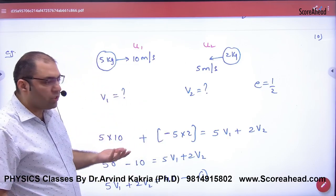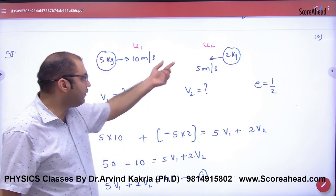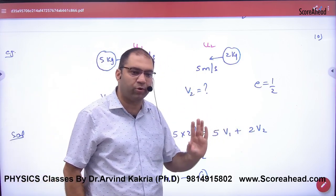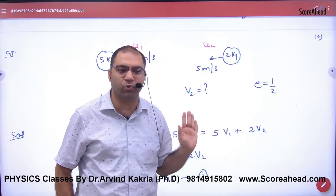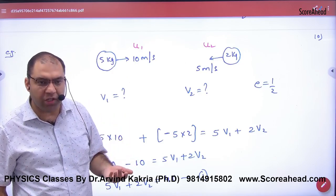And after collision what will happen? V1, V2. I don't know where the balls went. So that's why I did 5 into V1 plus 2 into V2. I didn't put any sign. Directly solved the question with V1, V2. So is this point clear? Do I know what the direction of V1, V2 will be? I don't know.